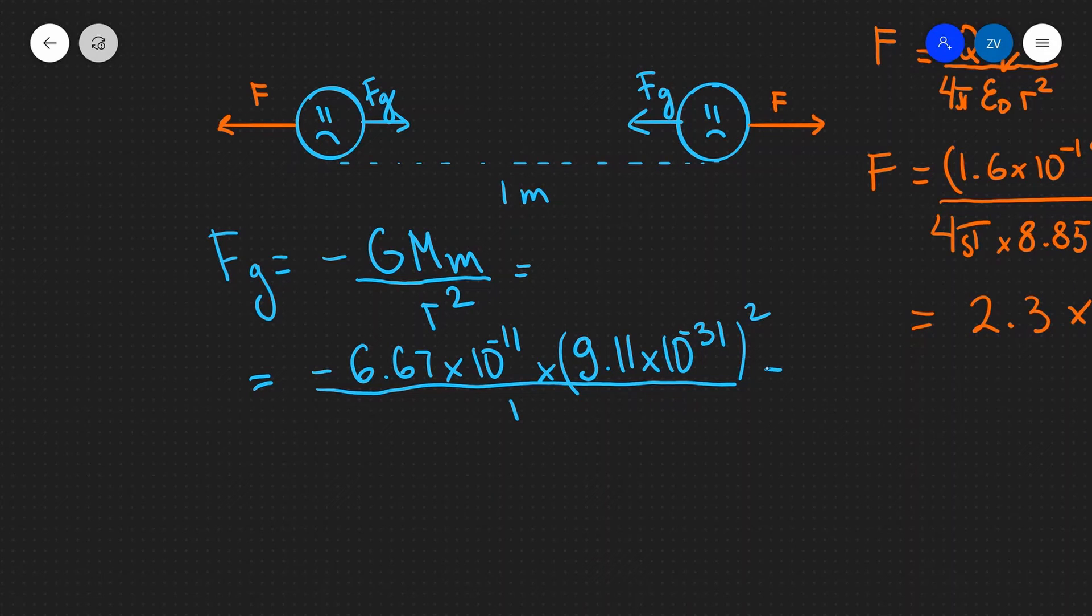And if we input that into a scientific calculator we're going to get a very tiny number, which is about 5.5 times 10 to the power of minus 71 newtons. Now have a look at that.